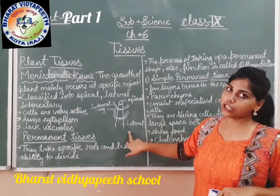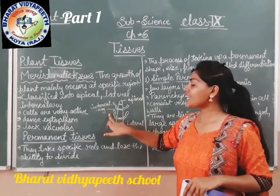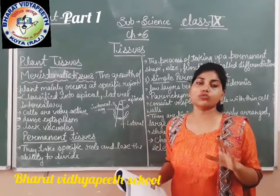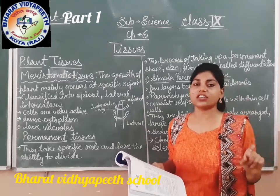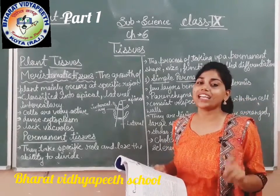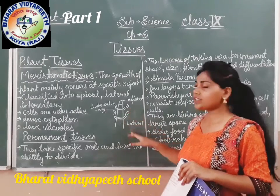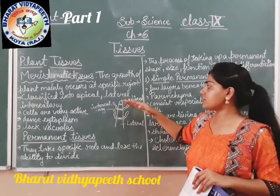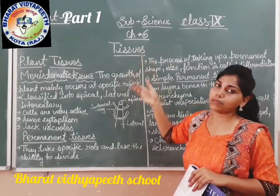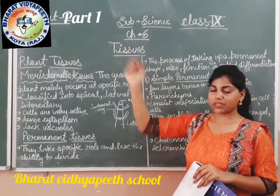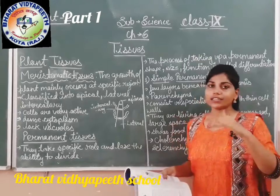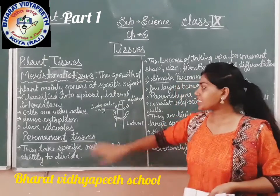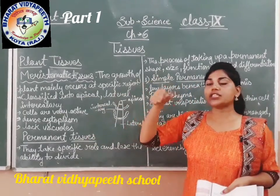Intercalary tissues are found at the nodes of the plant. As you can see in sugarcane, there are nodes between the sugarcane structure — that node part is known as the intercalary part. The uppermost part is known as apical tissue. This apical tissue slowly grows, giving the plant a specific height and providing growth to the plant.